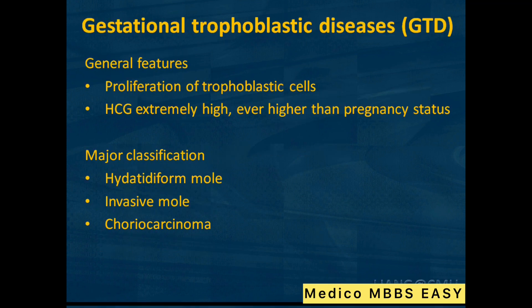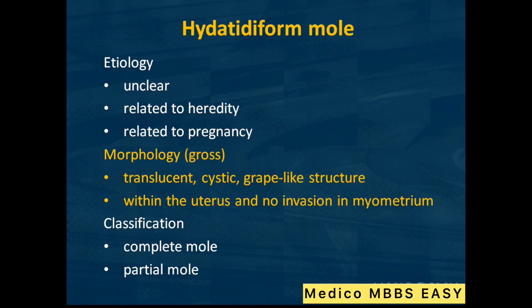Gestational trophoblastic diseases — general features: proliferation of trophoblastic cells, HCG extremely high, even higher than normal pregnancy status. Major classification: hydatidiform mole, invasive mole, choriocarcinoma. Etiology is unclear but related to heredity and pregnancy.